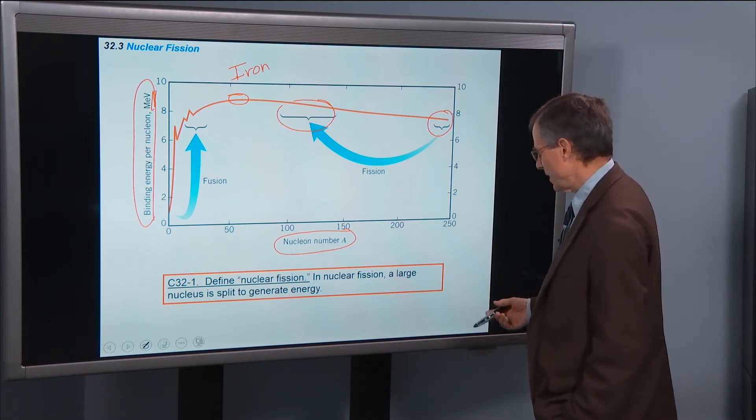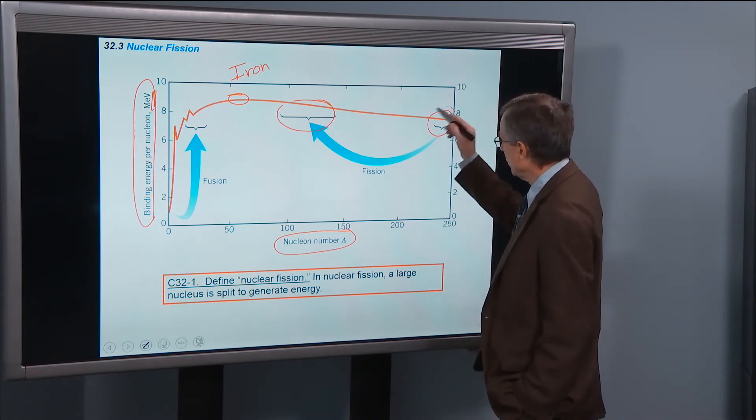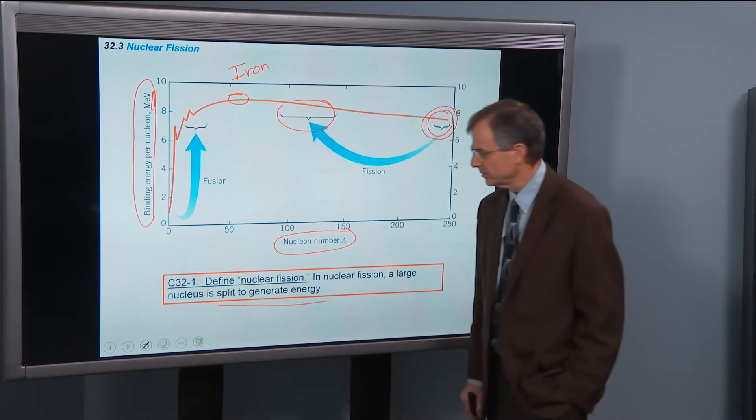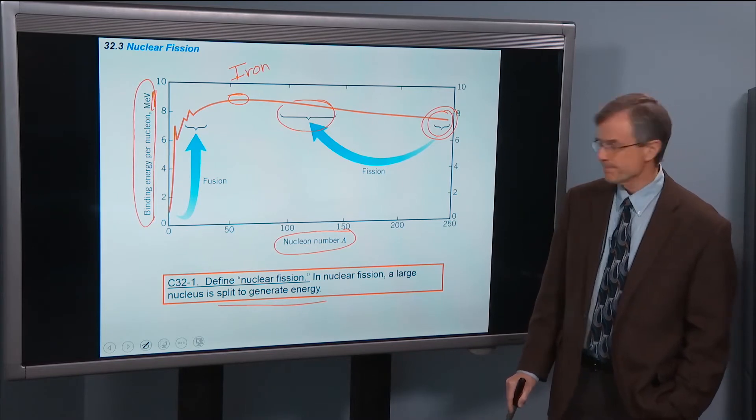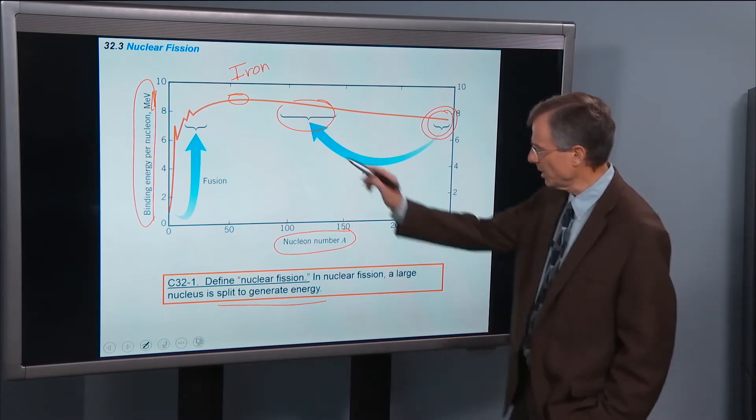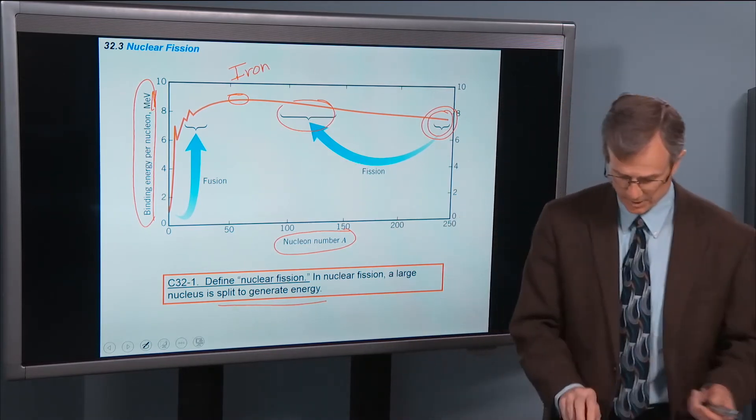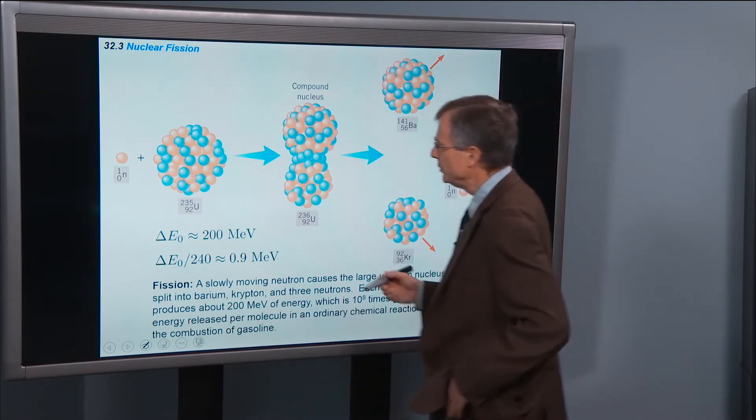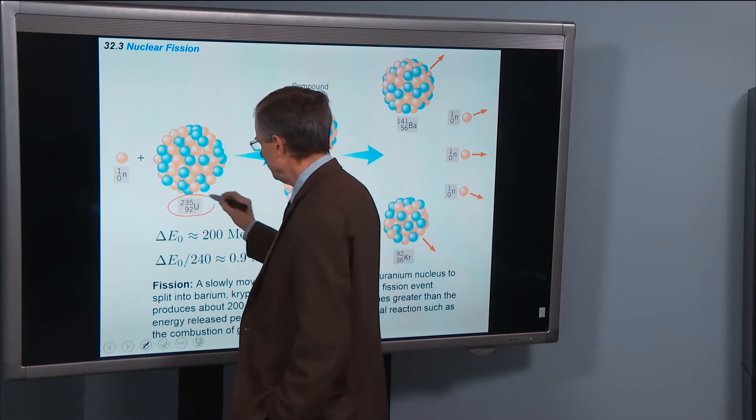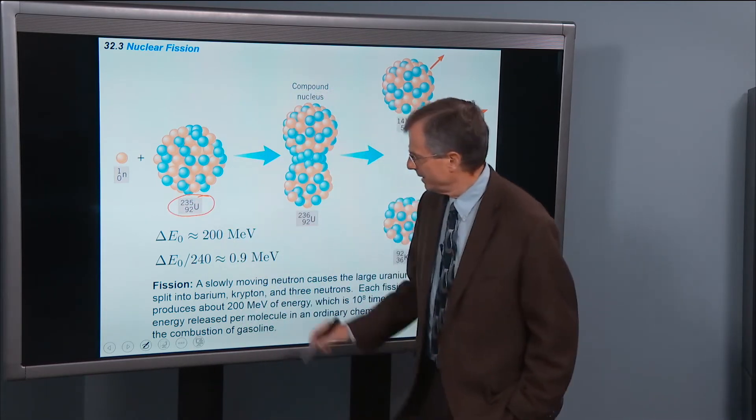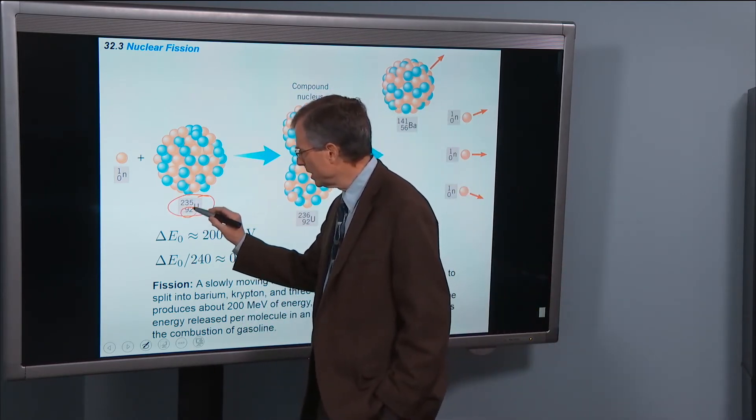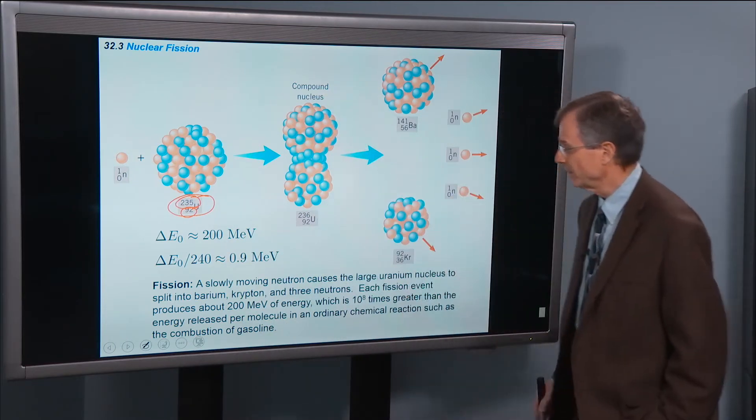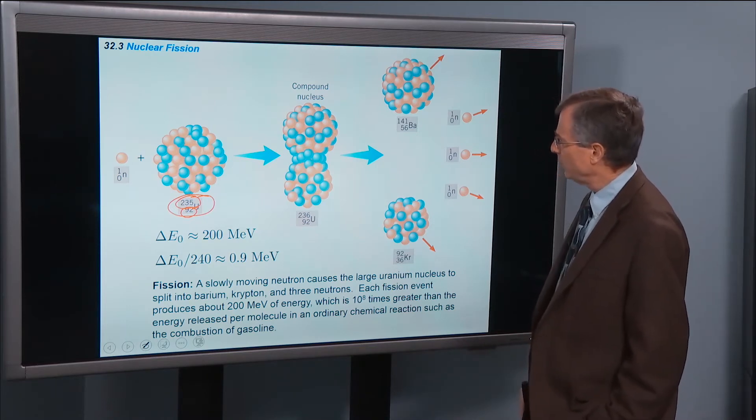So a fission reaction, you're taking a large nucleus and splitting it into smaller nuclei to generate energy. We'll talk about fusion reactions in the next section. For example, if we have uranium-235, big old nucleus with 92 protons and 235 nucleons—protons plus neutrons.